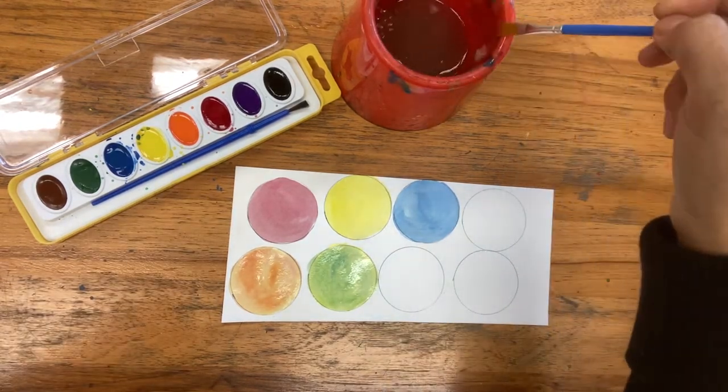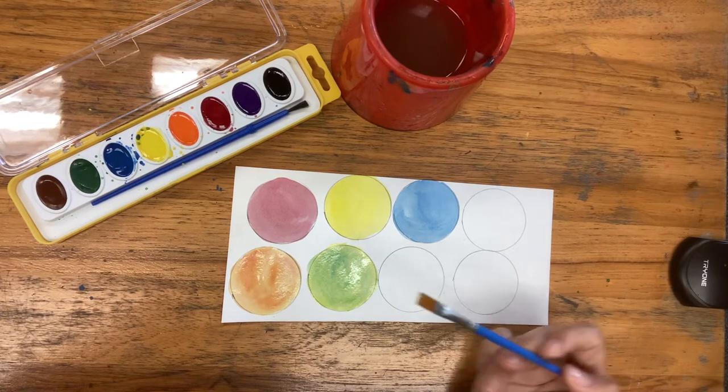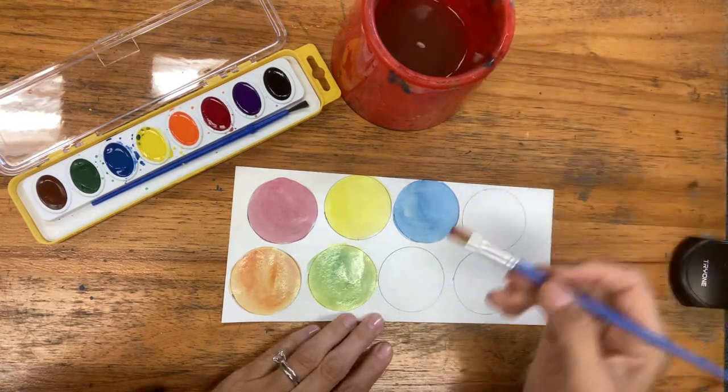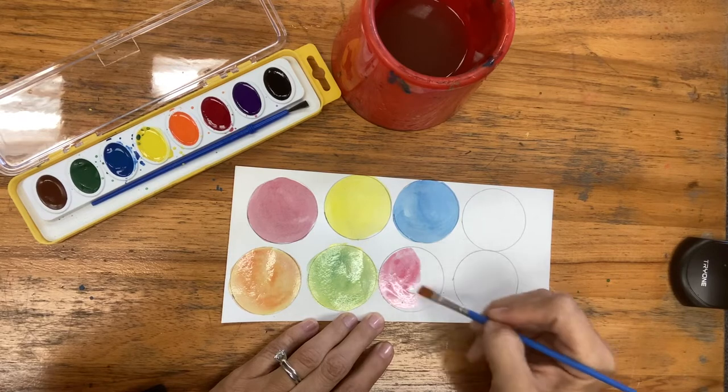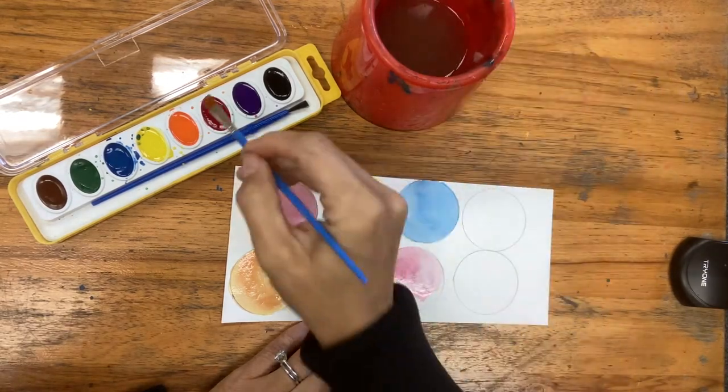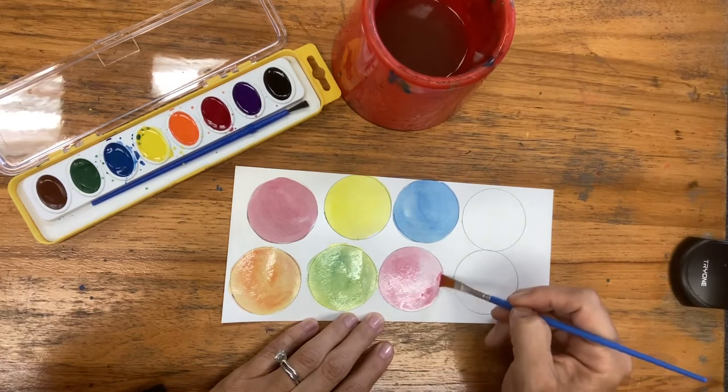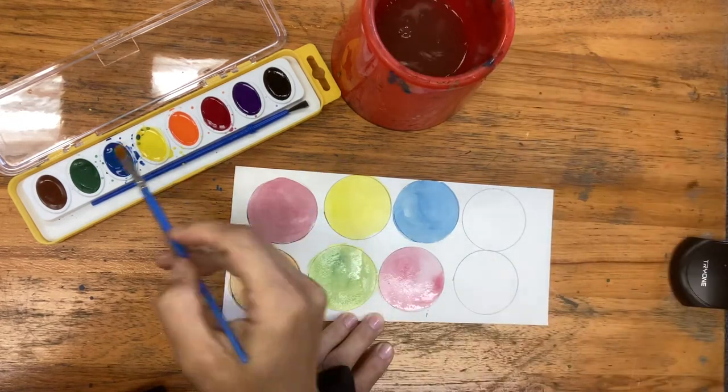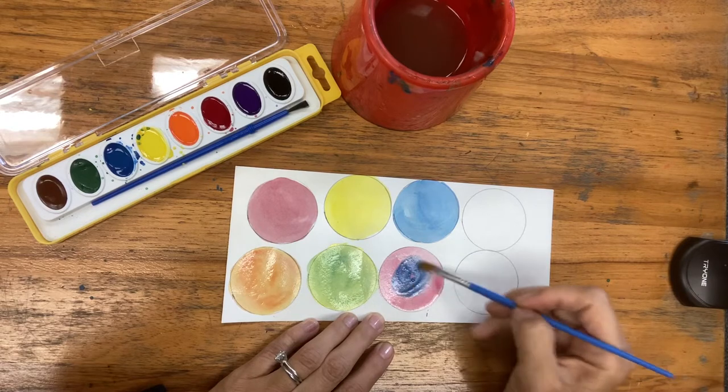And my last color, secondary color, I need to mix is my purple. So I'm going to do my red first and I'll get it nice and wet. And then I'll get my brush rinsed, grab a little bit of blue and start mixing in with the red.